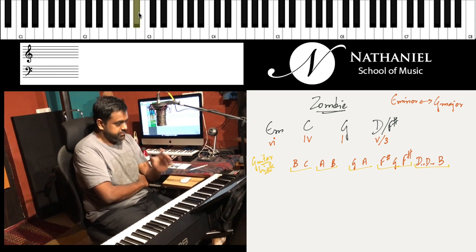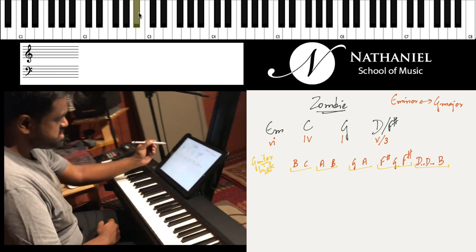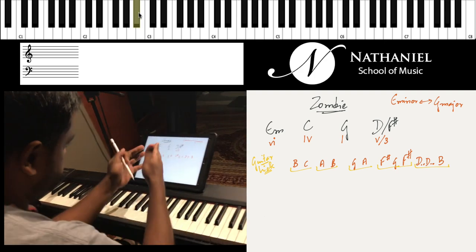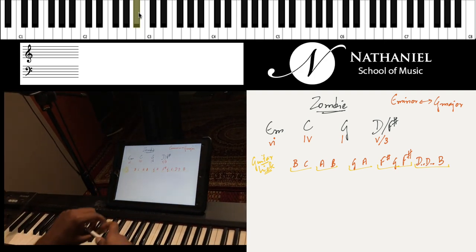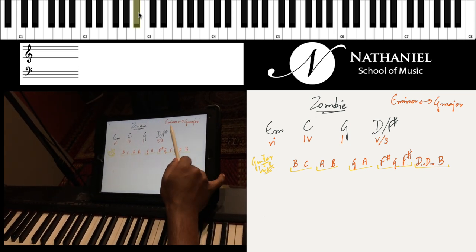I've written down the progression here using roman numbers that will show you the chord progression as per any scale. However, the original is on E minor, which is derived from G major. They are both relatives of each other.